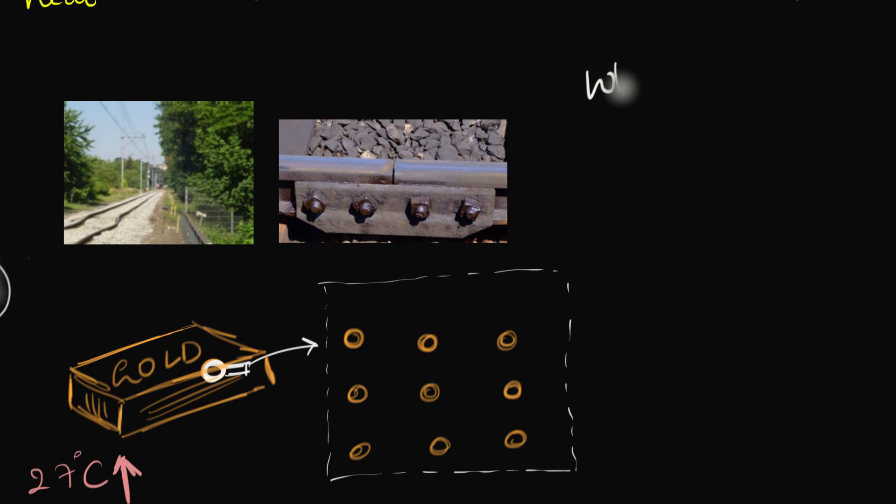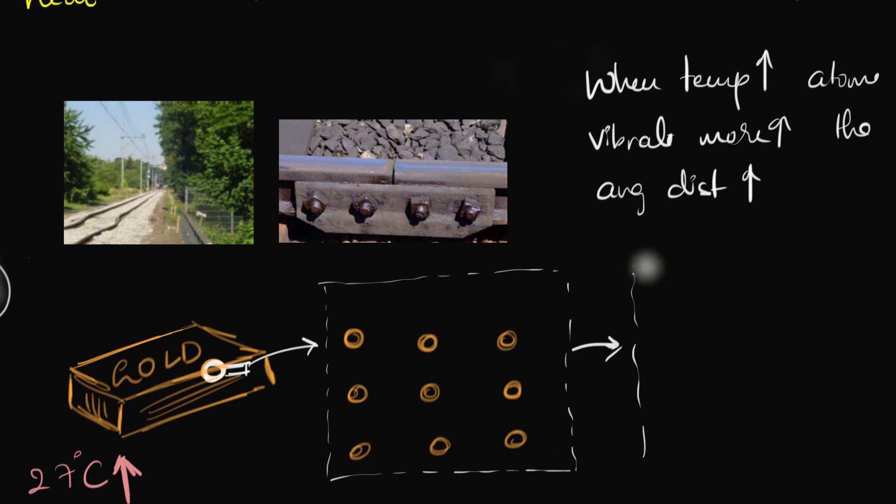Let me just write that down. So when temperature increases, we will see that the atoms vibrate more. Atoms vibrate more. They get more kinetic energy. And as a result, the average distance between them also increases. And it's for that reason, if we were to heat this up, then we would see probably something like this. The same atoms would now be much farther apart. It would be all much farther apart.